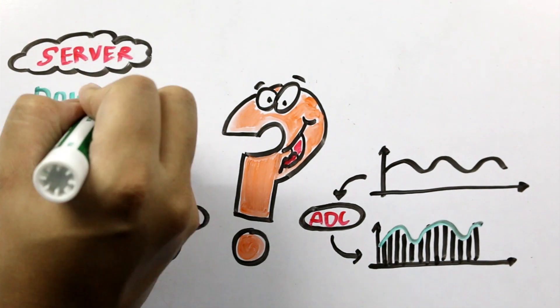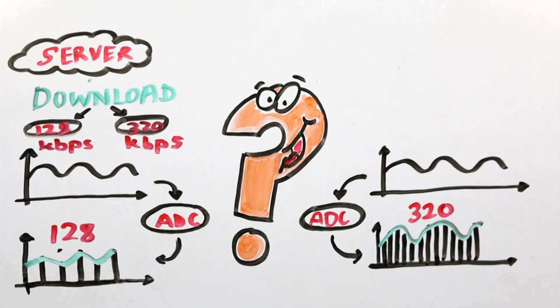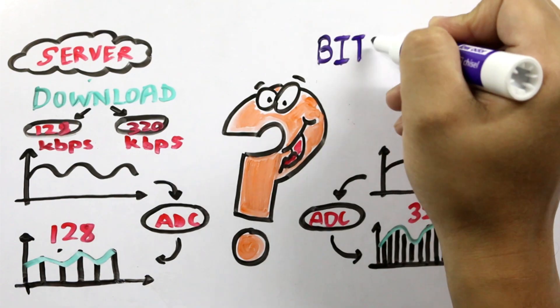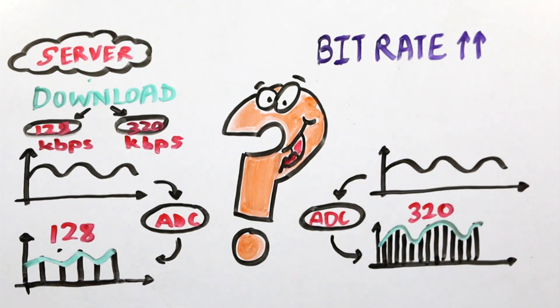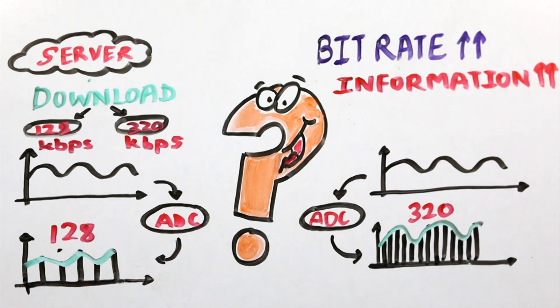When you download digital music, you might be given the option of downloading the same track at what are called different bit rates. Broadly speaking, the bit rate is the amount of information captured each time the music is sampled. So a higher bit rate means more information is captured and analog information is turned into digital information more accurately.